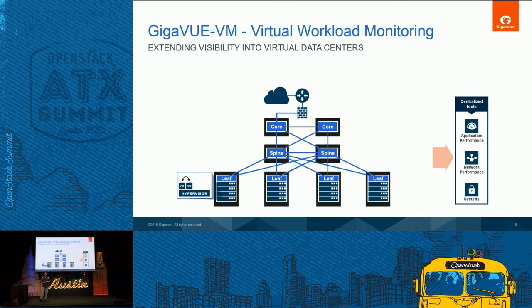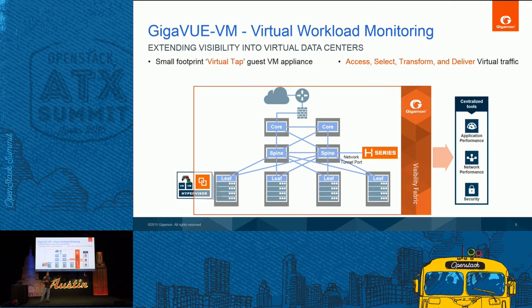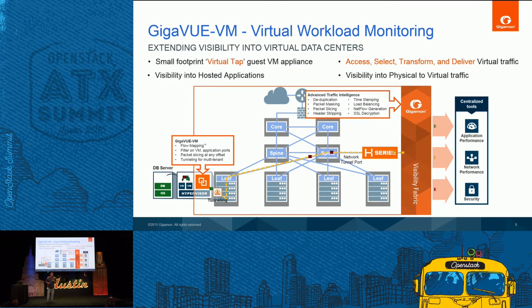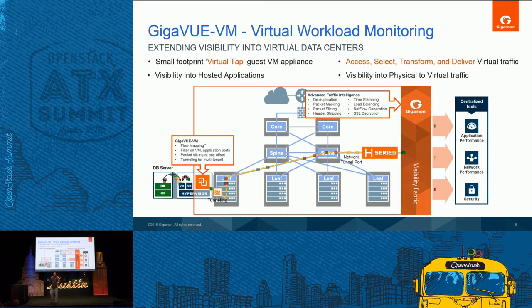At a high level, here's how a typical deployment looks: you deploy a GigaView VM — a virtual tap — that gets traffic from the hypervisor and routes it over your production network into your visibility fabric to provide the tools. Some customers also have physical database servers that haven't migrated to virtual, so visibility may span from hypervisor to physical server. It's a combination of intelligence at the edge capturing virtual traffic, plus traffic optimization on hardware appliances so your tools get better visualization.